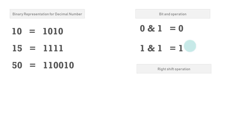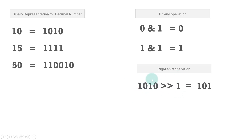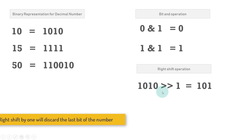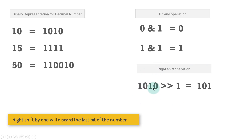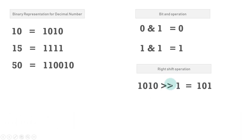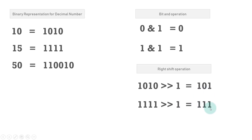The second concept is the right shift operation, represented by two rightward angle brackets. If you do a right shift by one on a number like 1010, it discards the last bit — the least significant bit — leaving 101. If you right shift by two, two bits are lost. Similarly, for 1111 representing 15, a right shift by one leaves 111.